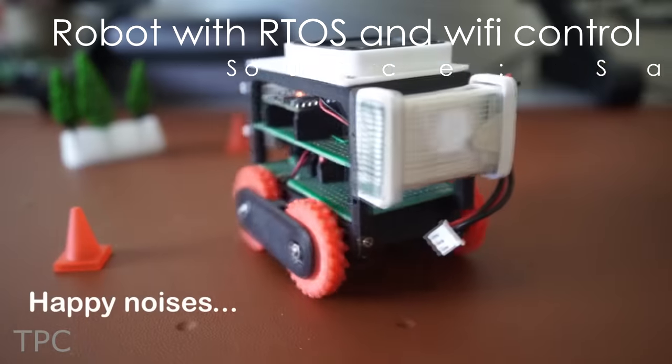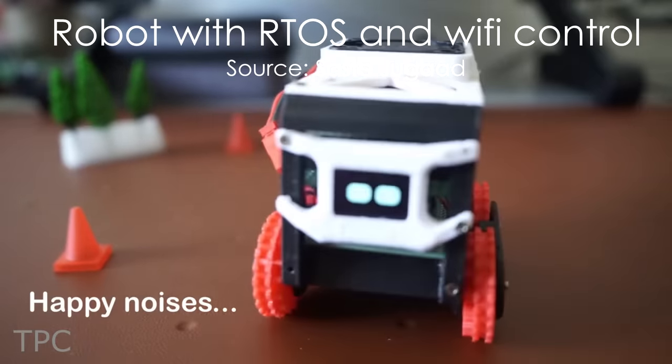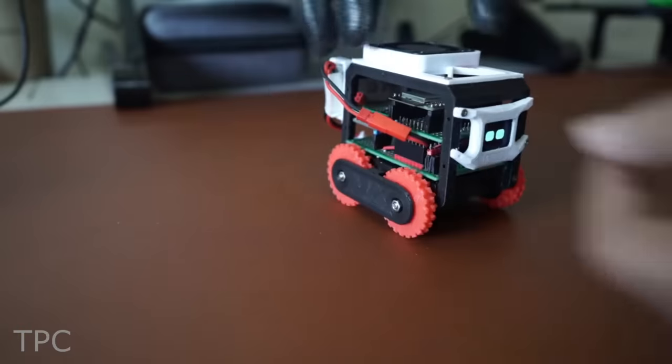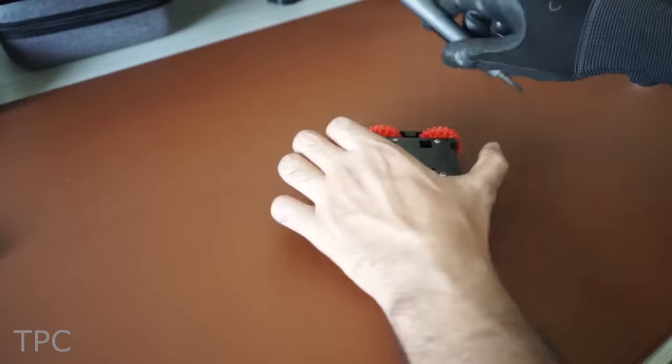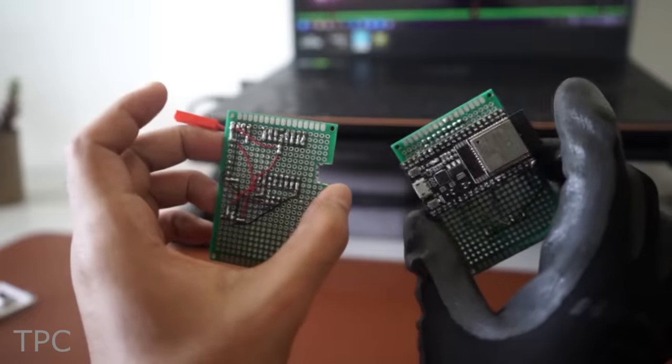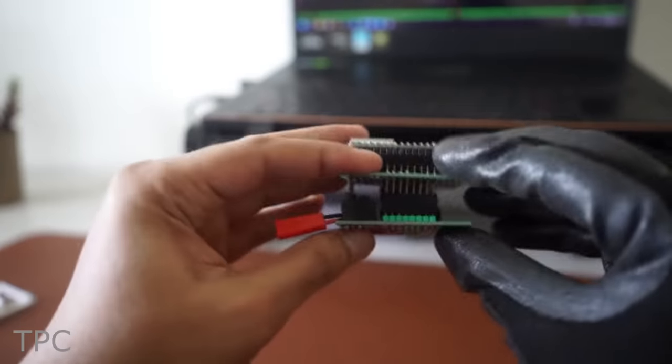If you're planning to build a robot with a real-time operating system and Wi-Fi connectivity, then this is the project you need. Shubham always tries to keep his projects as compact as possible, so he assembled the circuit on a double-side perfboard.